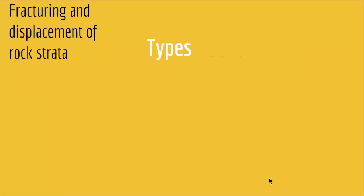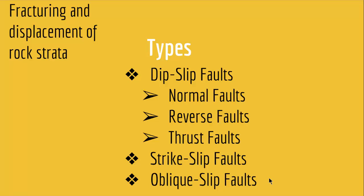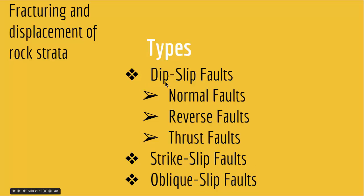So how many types of faults do we have? We have three types: we have dip slip faults, we have strike slip faults, and we have oblique slip faults. Oblique slip faults are faults that are both strike slip and dip slip.